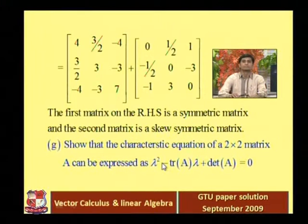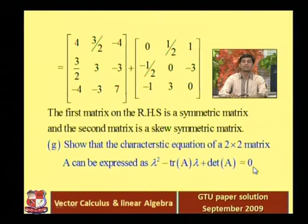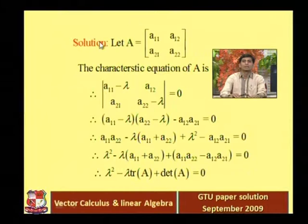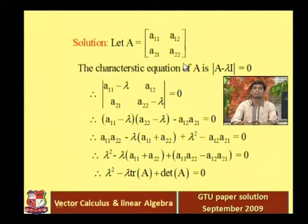Next question: show that the characteristic equation of a 2×2 matrix A can be expressed as lambda squared minus trace of A times lambda plus determinant of A equals 0. Trace of A means the sum of the main diagonal entries. Consider any general 2×2 matrix with entries a11, a12, a21, a22. The characteristic equation is the determinant of (A minus lambda I) equal to 0.